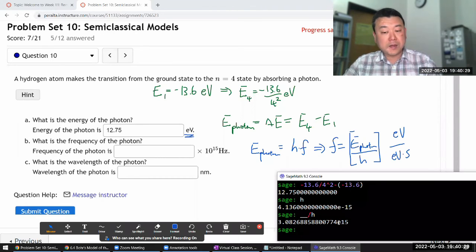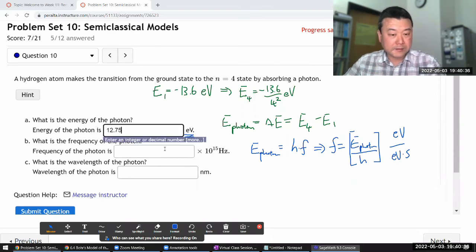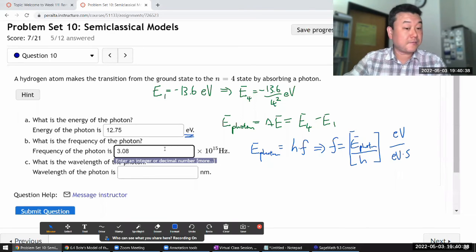This is already times 10 to the power of 15. That is already that. So let me just plug in the mantissa. 3.08. That's the frequency of the photon.